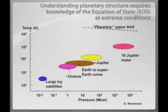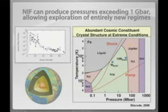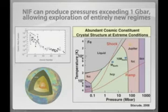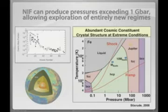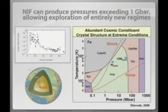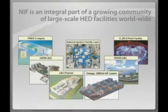How does NIF play a role in this? The answer is — as shown in this view graph — we have the ability to shock or ramp up materials to the appropriate temperatures and pressures. Which is, by the way, cold temperatures and high pressures — cold meaning thousands of degrees. We can replicate all the conditions of all those planets and start quantifying the equation of state for these materials as they go.